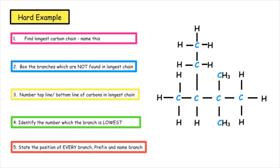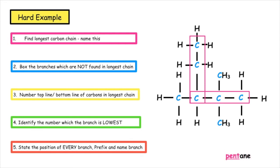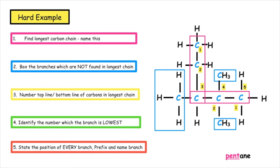Let's do a hard example. The first thing is to find the longest carbon chain - this time it is five carbons long, so the name of the alkane would be pentane. We put boxes around the branches not found in the longest chain, and number the carbons on the top line from one to five, then backwards on the bottom. The positions we have are two, three, or four. Two is the lowest, so we use the bottom line numbers. The name of this alkane is 2,2,3-trimethylpentane.